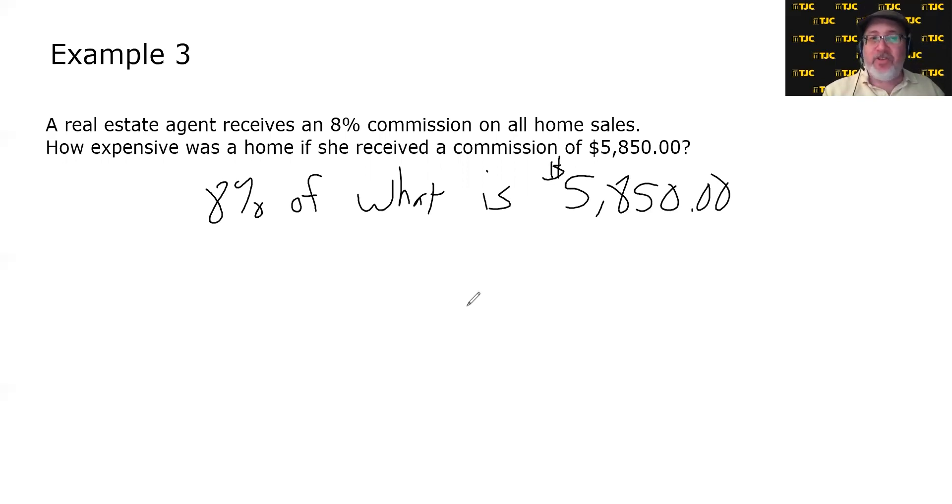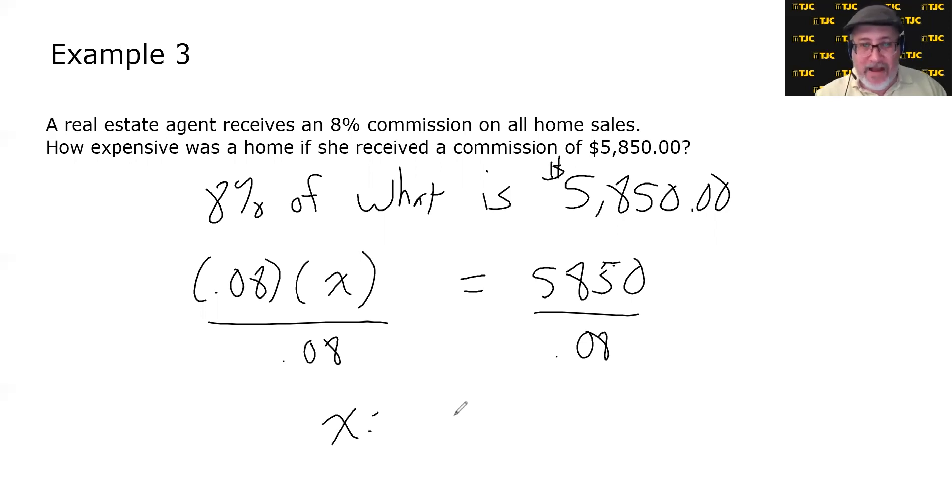If we were to solve it using the equation, we would say 0.08 times X, since I don't know the what number, equals 5,850. Don't need the decimal there since we're not worried about context right now, just the number. And then to solve for X, we would divide by 0.08. And let's see what we get. 5,850 divided by 0.08, 73,125.